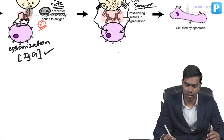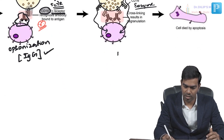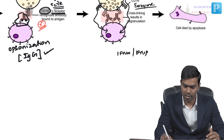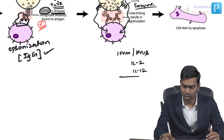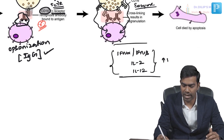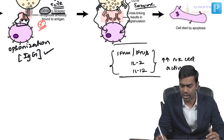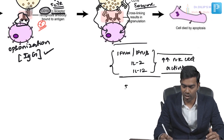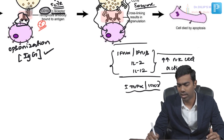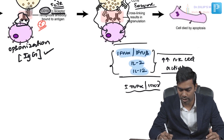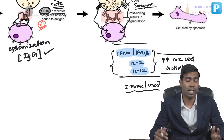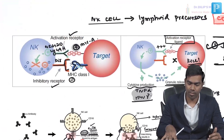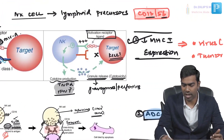Cytokines that enhance the function of natural killer cells include TNF-alpha, interferon gamma, interferon alpha, interferon beta, interleukin-2, and interleukin-12. TNF-alpha and interferon gamma also enhance NK cell function to some extent, but interleukin-2 and interleukin-12 are the major cytokines that enhance NK cell activity.